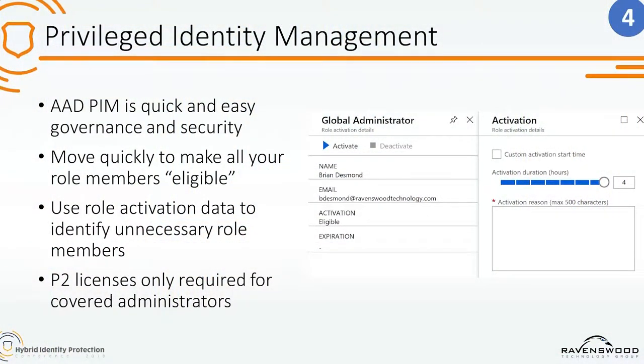Another one that's really easy to turn on is PIM — Privileged Identity Management. What PIM lets you do: you take everybody that's in one of your privileged roles in Azure AD or has privileged access to Azure resources, and rather than having that access all the time, you make them eligible for that access when they actually need it. They click a button, put in the reason they need it — that gets logged — and for a period of time their access is elevated. When that period expires, it automatically strips away until the next time they need it.